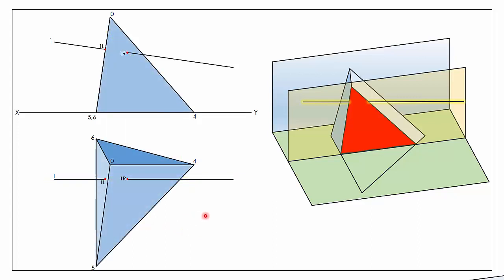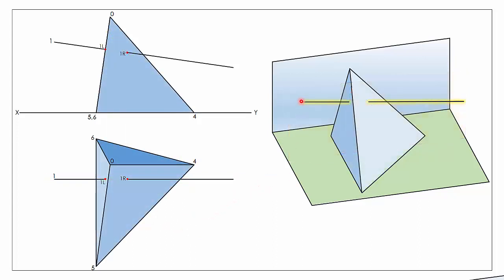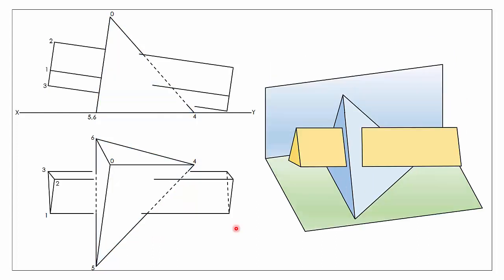That is the vertical sections method used to locate piercing points for a straight line and a pyramid. In our next example we bring it up one level — instead of a single line we're going to look at a triangular prism. Our triangular prism is essentially the same problem, only instead of one line we have three edges on our solid, labeled one, two and three in both plan view and elevation.